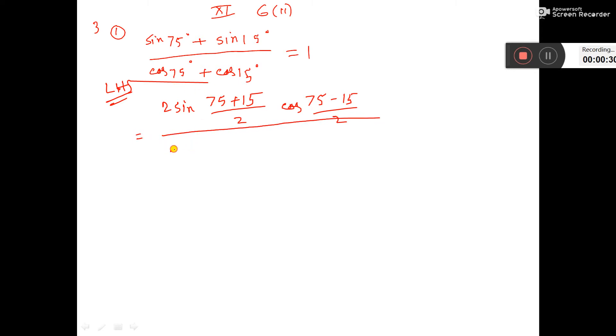And cos c plus cos d equals 2 cos c plus d by 2 into cos c minus d by 2.